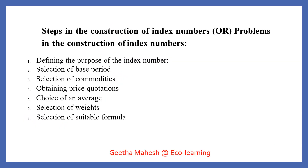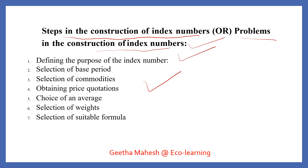Dear students, today we are looking at the steps — or problems — in the construction of index numbers. There are seven steps: first, define the purpose of the index number; second, selection of base year; third, selection of commodities; fourth, obtaining price quotations; fifth, choice of an average; sixth, selection of weights; and seventh, selection of a suitable formula.